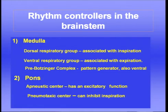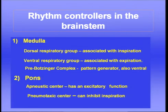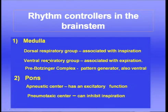Let's look at the rhythm controllers in the brain stem. I find this a somewhat confusing area, partly because so much research is ongoing. In the medulla we have two groups of cells, sometimes called respiratory centers. One is the dorsal respiratory group in the medulla — dorsal meaning towards the back — and these seem to be particularly associated with inspiration. Then we also have a ventral respiratory group of neurons, which seem to be particularly associated with expiration.